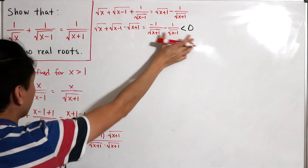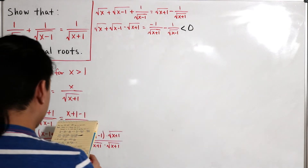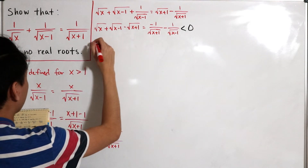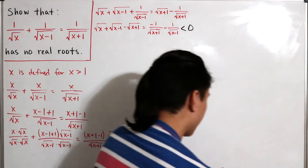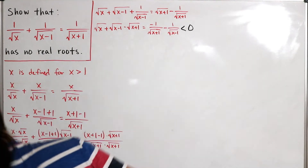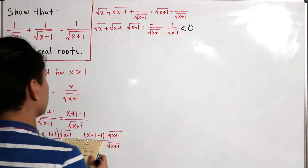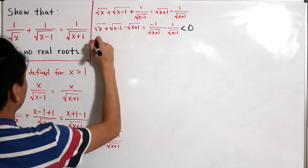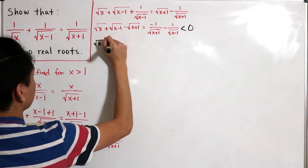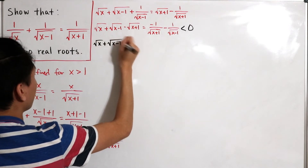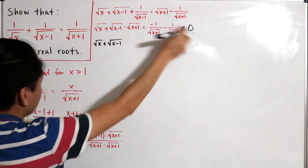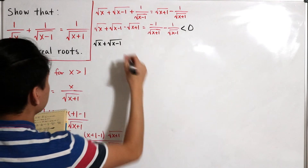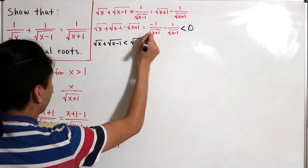Since the right-hand side is strictly less than zero, the left-hand side must also be strictly less than zero. Utilizing this inequality, we write: the square root of x plus the square root of x minus 1 minus the square root of x plus 1 is less than zero. Adding the square root of x plus 1 to both sides gives us this expression is less than the square root of x plus 1.